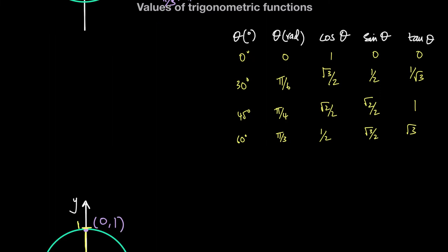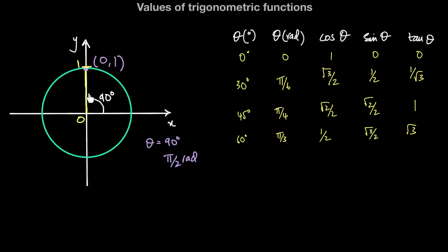The last value is when theta is equal to 90 degrees. The radius is perfectly vertical, and since the point lies on the y-axis, the x-coordinate is 0 and the y-coordinate is 1. So when theta is 90 degrees, or pi over 2 radians, cosine theta is 0 and sine theta is 1. The tan of 90 degrees, or pi over 2 radians, is sine of 90 divided by cosine of 90, which is 1 divided by 0. Since we can't divide by 0, tan of 90 degrees is an undefined value.